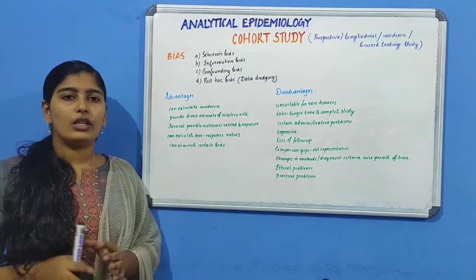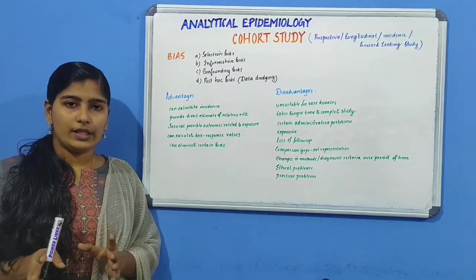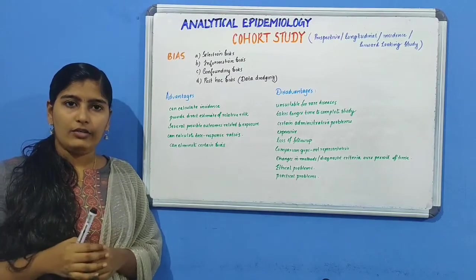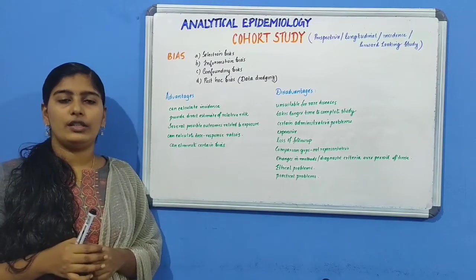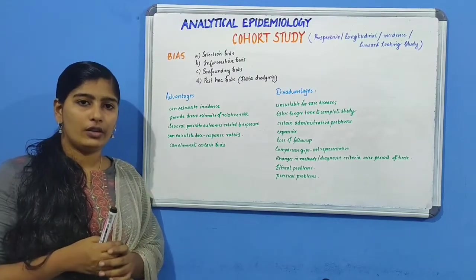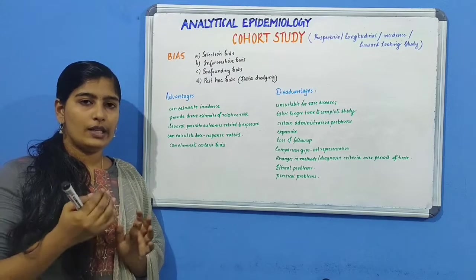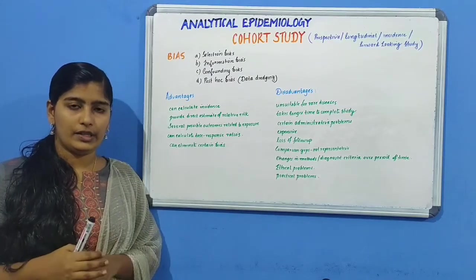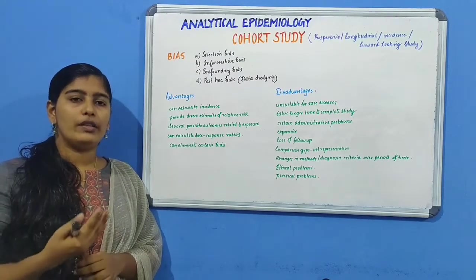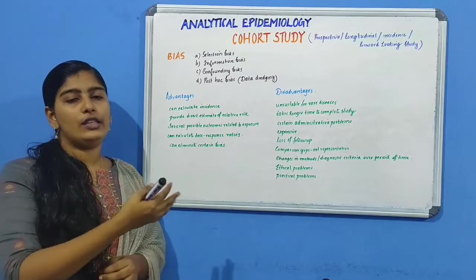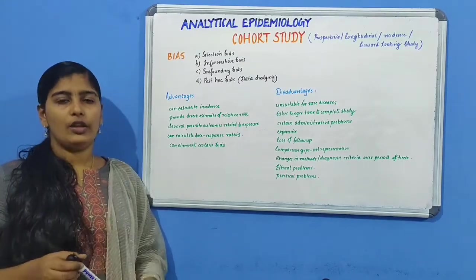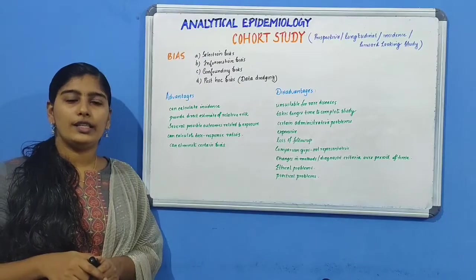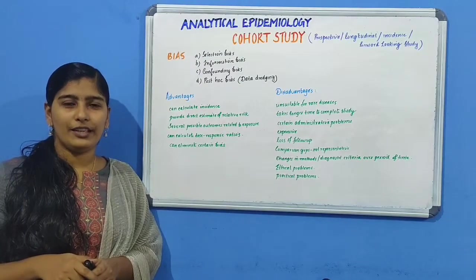This is cohort study in a nutshell. We have discussed what cohort study means, the salient features, the framework or design, the elements, the types of bias, and the advantages and disadvantages. Hope you have understood the class. For more such videos, like, share and subscribe. Thank you.